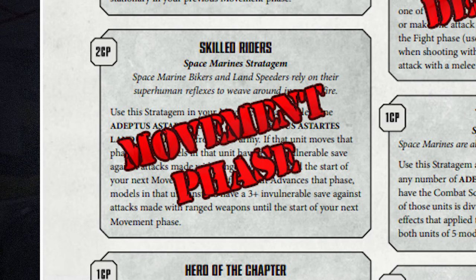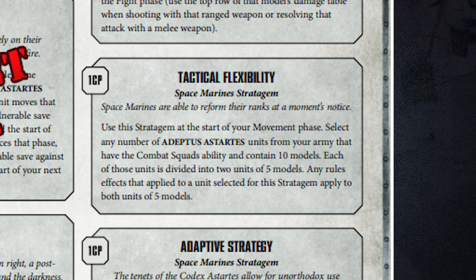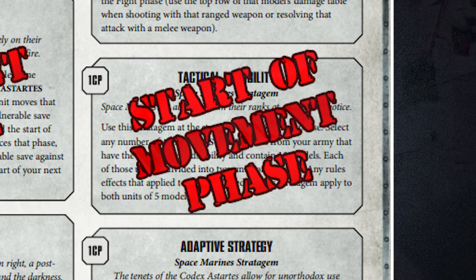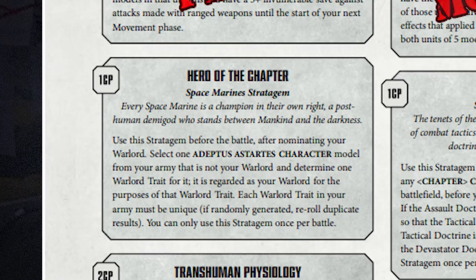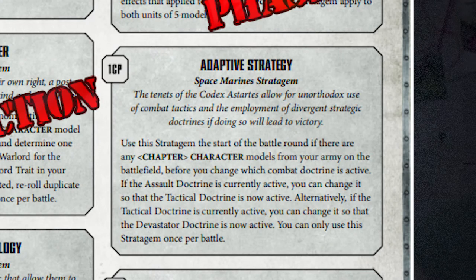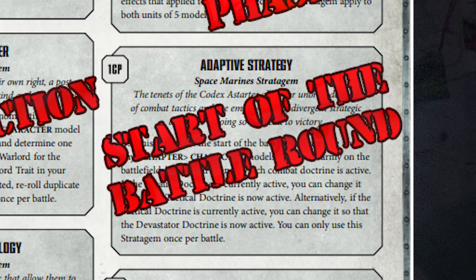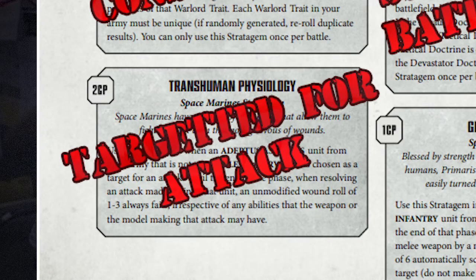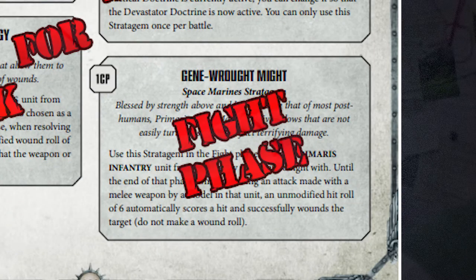Tactical Flexibility — used at the start of a movement phase. Hero of the Chapter — used during list construction. Now we have jumped back before the game begins; we're not even playing the game at this point. Why is this here? Adaptive Strategy — used at the start of a battle round, so we're moving forward, back into the battle round. Transhuman Physiology — targeted for an attack. We've left the phases and we're back to stratagems proc'd by specific events. Gene Rot Might — used in the fight phase. Why would we not just jump back into the phases again? I shouldn't even be surprised at this point.